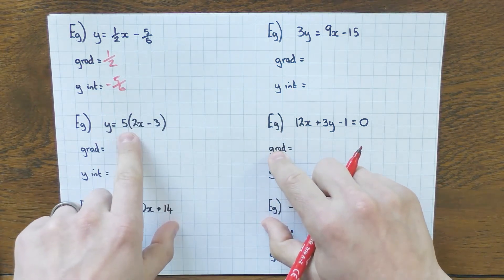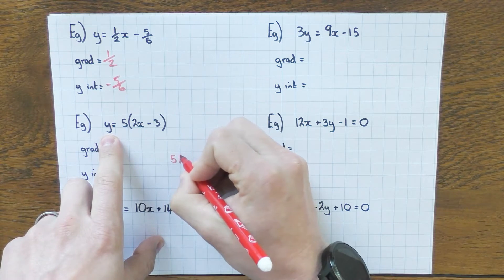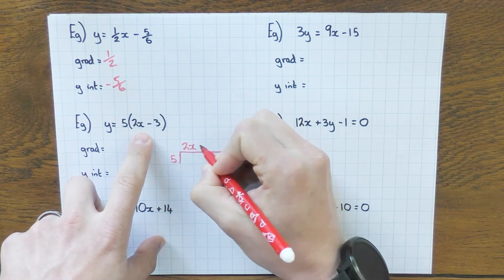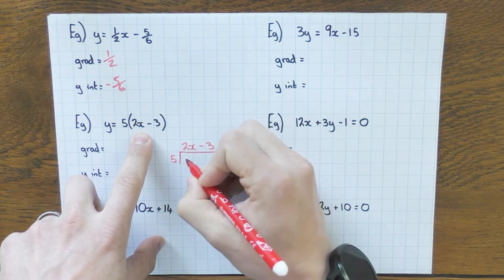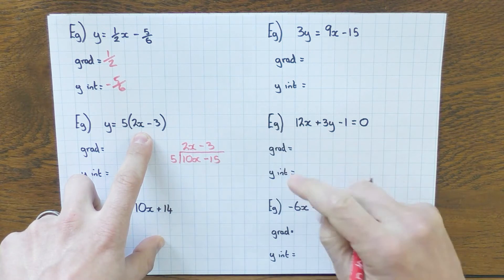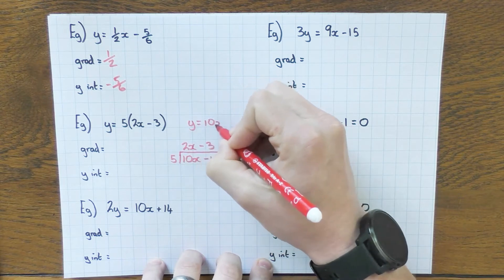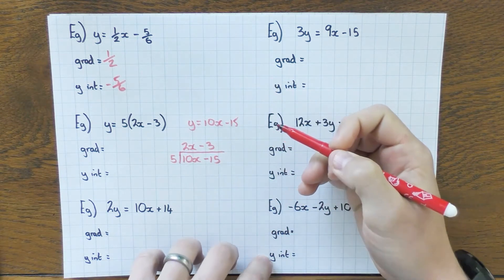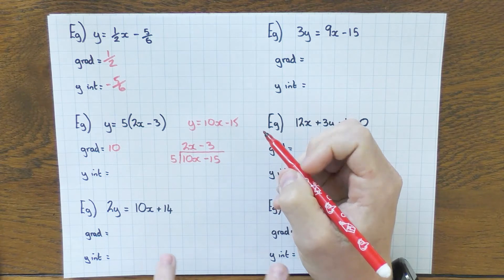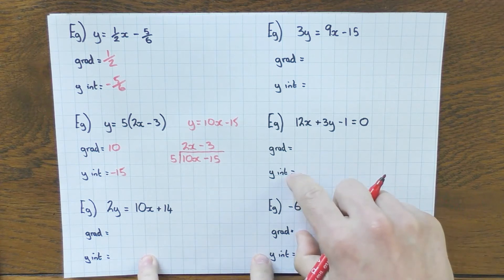This is where we get a tad juicier. This one, we have a bracket. Don't worry, just expand the bracket. That's what I'm going to do. Again, if you're unsure of how to expand brackets, have a look at my expanding single brackets video. So I'm going to draw my grid. 5 times 2x is 10x. 5 times minus 3 is minus 15. So I can put that back up here. y equals 10x minus 15. And then it's the same as the first sheet. What's in front of the x? Well, it's 10, so the gradient is 10. And what we've got at the back? Minus 15, so that must be the y-intercept. Minus 15. So if you see a bracket, not a problem. Just expand it, and away you go.